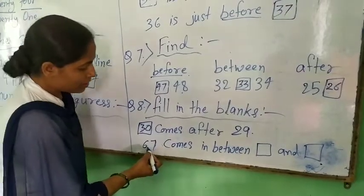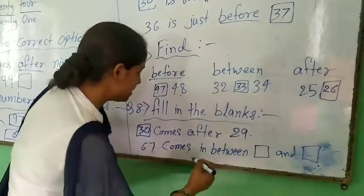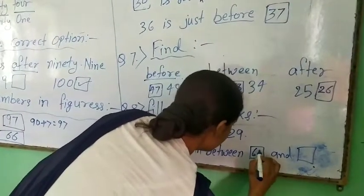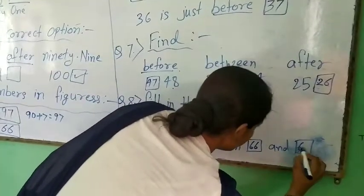And next, 67 comes in between dash and dash. 67 comes in between 66 and 68.